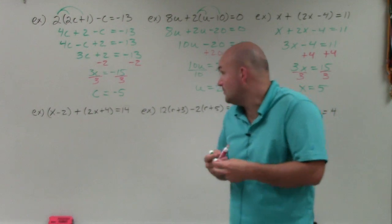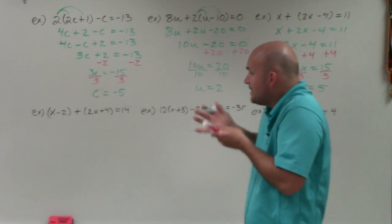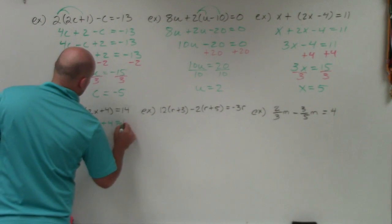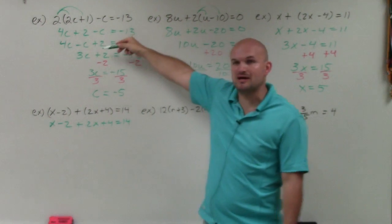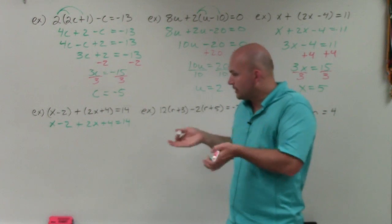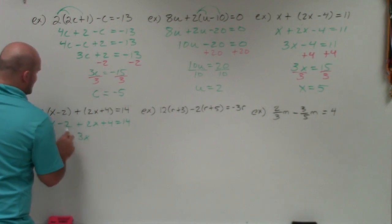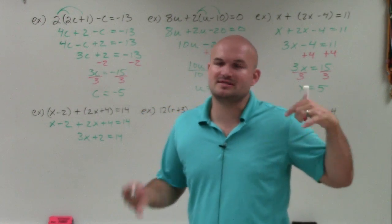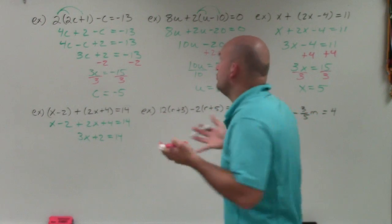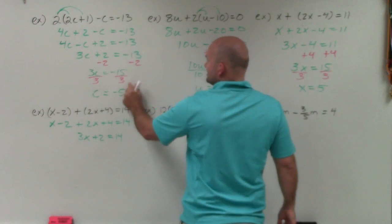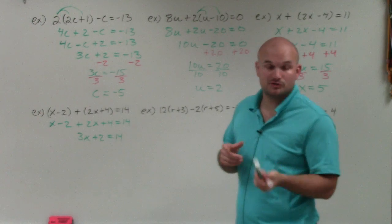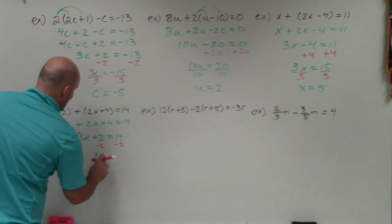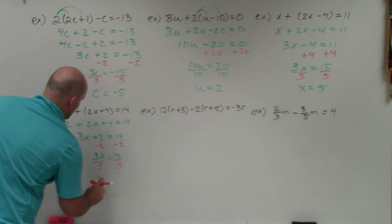The next example has no meaningful parentheses — they're not multiplying by anything else — so I can just rewrite the problem as x minus 2 plus 2x plus 4 equals 14. Since everything is on the same side, I can combine the variables and the numbers directly without using the properties of equality. Combining x plus 2x gives 3x, and negative 2 plus 4 gives positive 2, so 3x plus 2 equals 14. Subtract 2 from both sides to get 3x equals 12, then divide by 3 to get x equals 4.